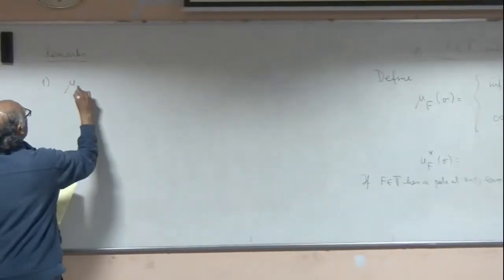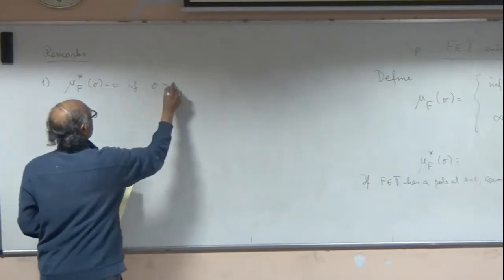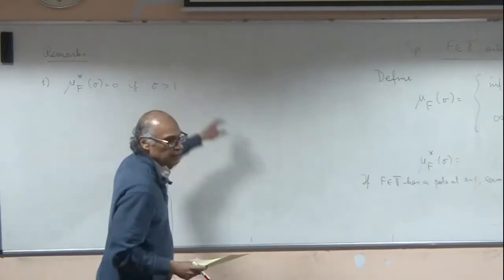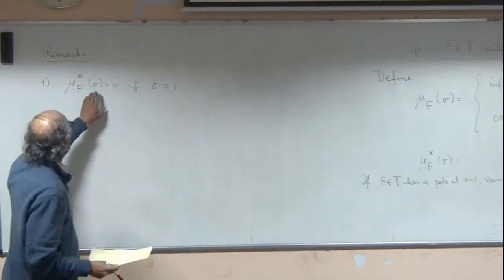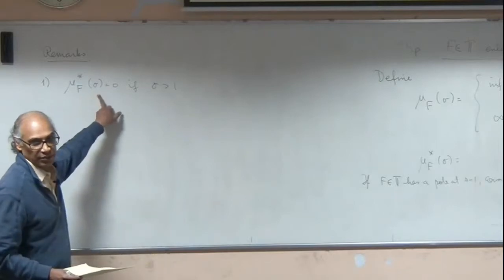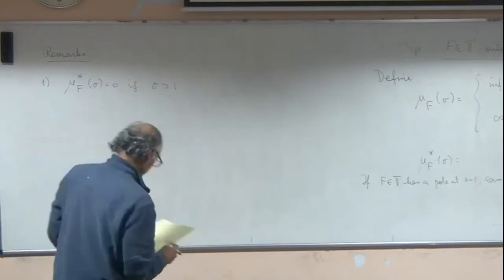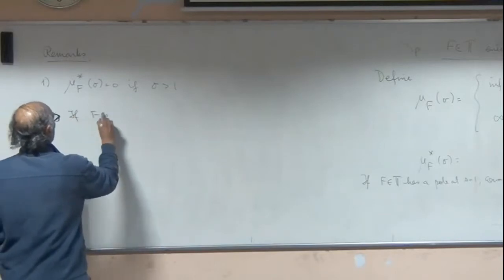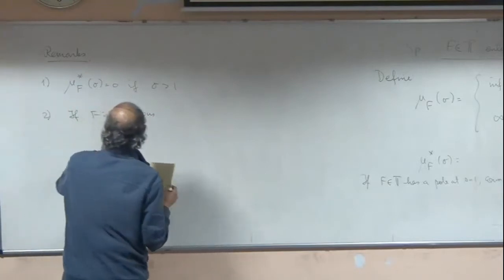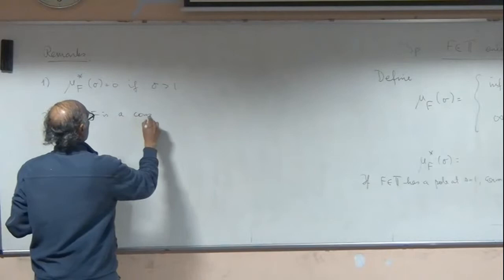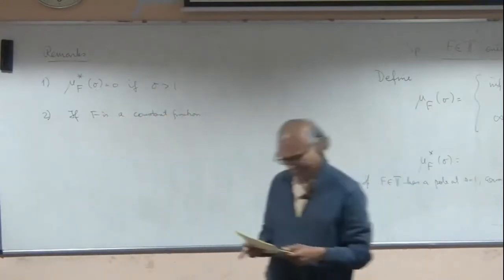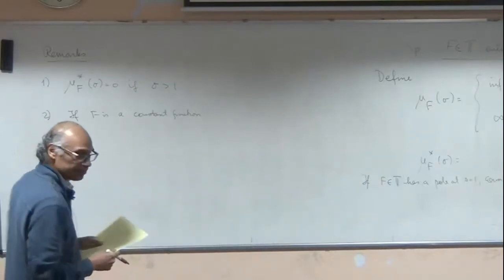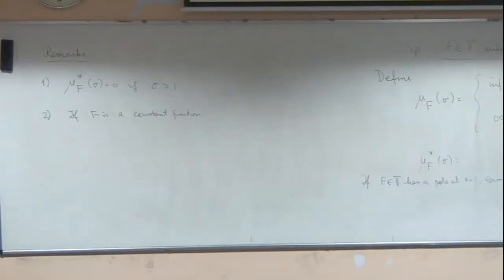Some remarks. First is that mu_F*(sigma) is 0 if sigma is greater than 1. That's because we're given a function which is defined by an absolutely converging Dirichlet series to the right of 1, and therefore we can bound it to 0. You cannot conclude at this point that mu_F of sigma is 0. Second, as an example, if F is a constant function... [discussion about dependence on sigma] Lambda, of course, will depend on sigma, yes.